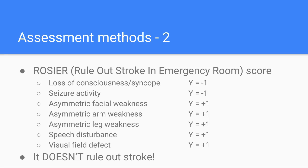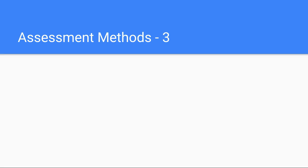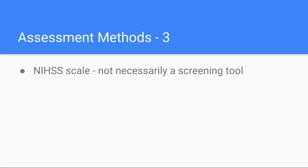Unfortunately, given the brain's complexity, there simply isn't a very good screening tool that misses very few patients. Hence my advice previously: sudden onset neurology needs serious consideration for stroke. There are far more complicated assessments than these, so complicated they can't really be remembered, with the most common in use in the UK being the NIHSS scale. But again, these are by no means perfect, and indeed in the case of NIHSS, it wasn't purely designed as a screening tool.